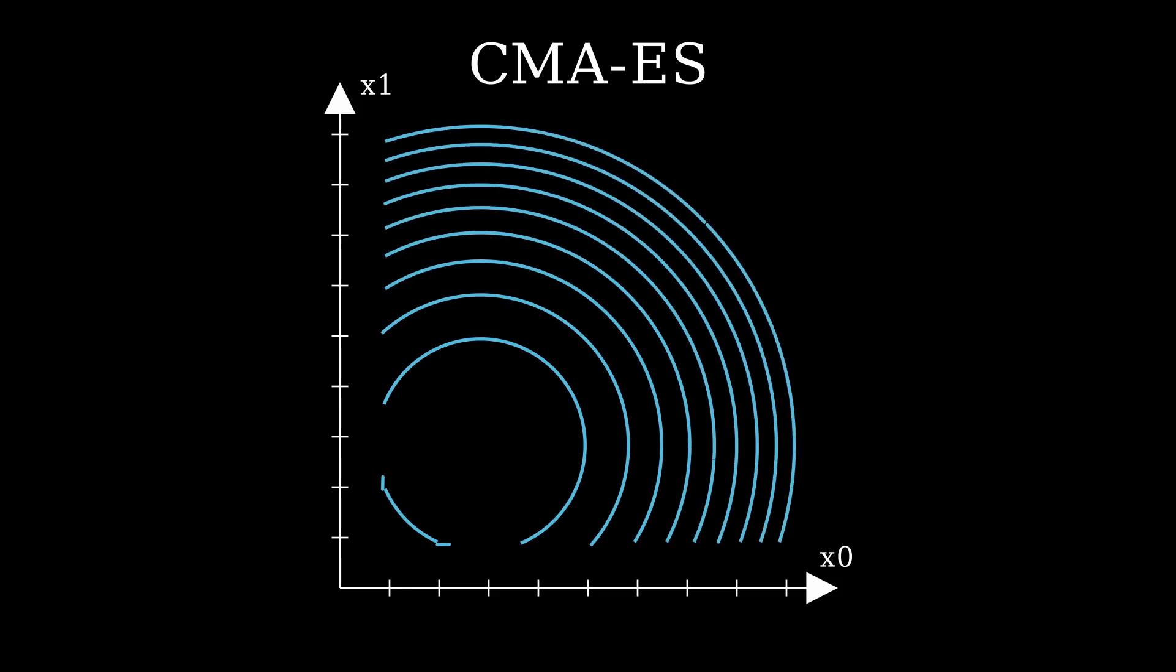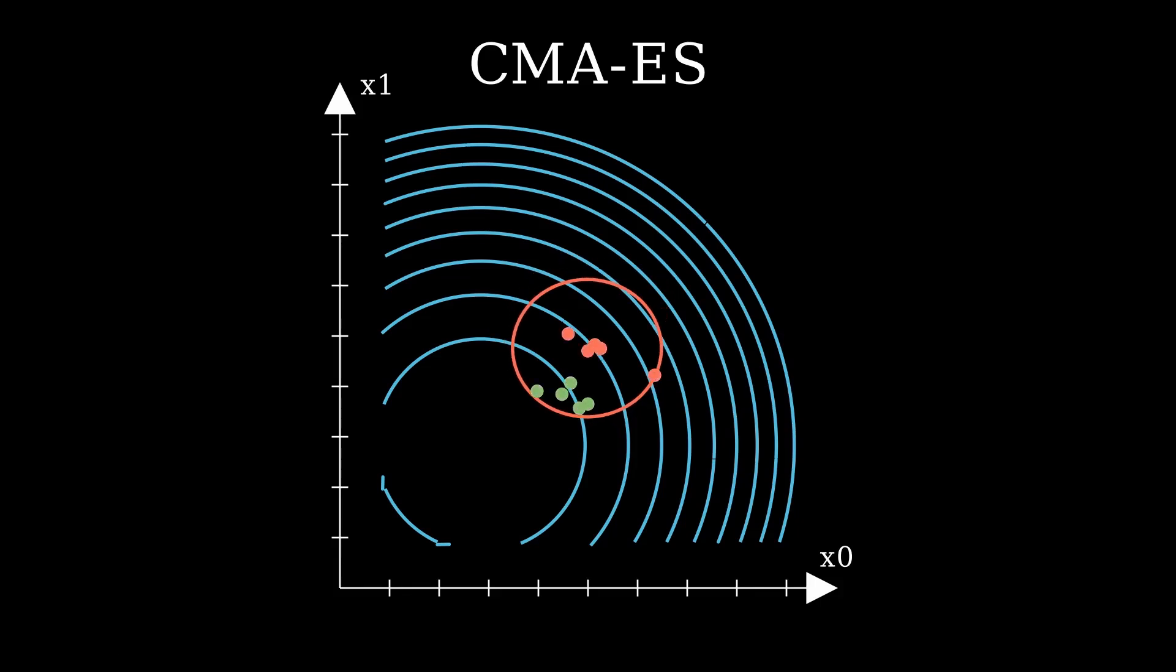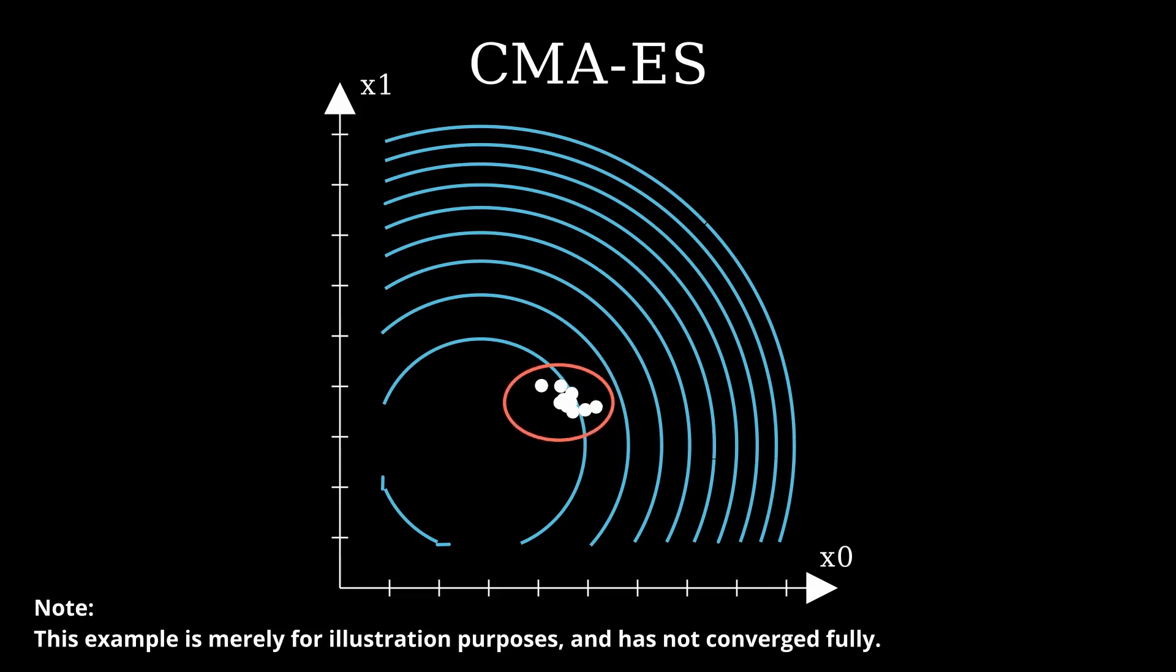It is a type of evolution strategy, where the core idea is that instead of a population, we have an n-dimensional Gaussian distribution we evolve over time. Every generation, we sample a new population as points within the distribution, and we reshape the distribution around individuals that were evaluated with higher fitness. When doing this over and over again, we end up with a distribution that is centered on a solid solution of the function.